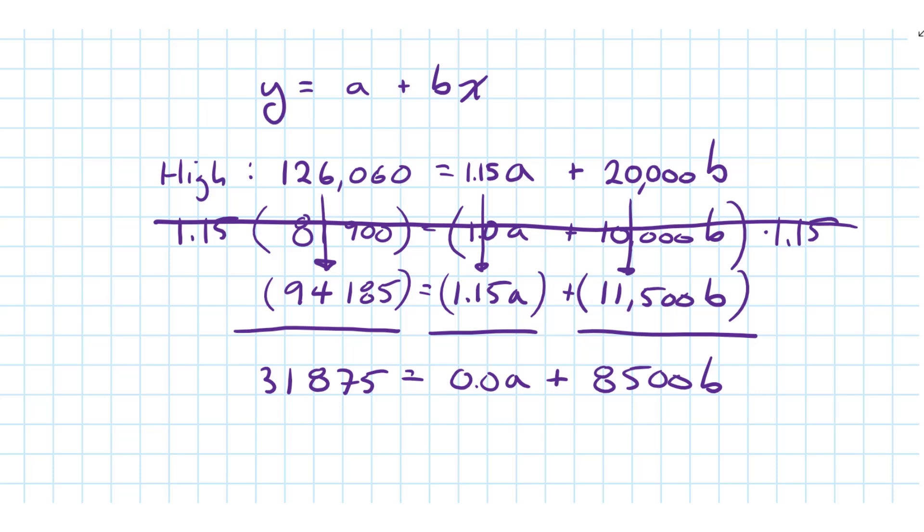Now we can get rid of the a because 0a is 0. So now we have some basic algebra to get to the b. 31,875 equals 8500b.